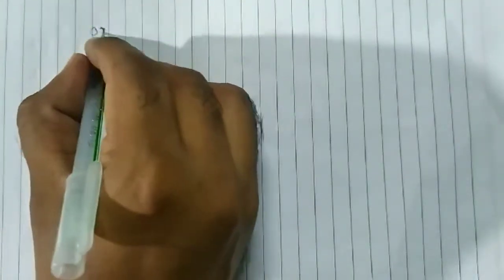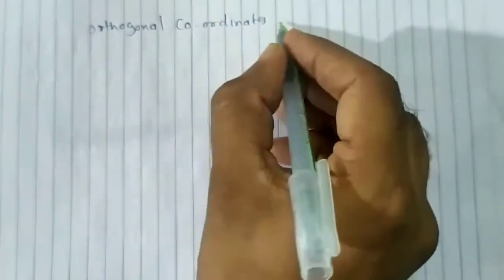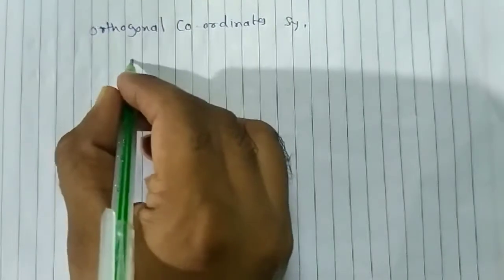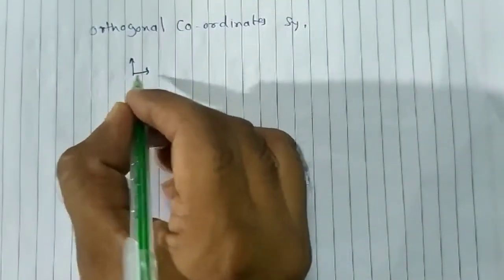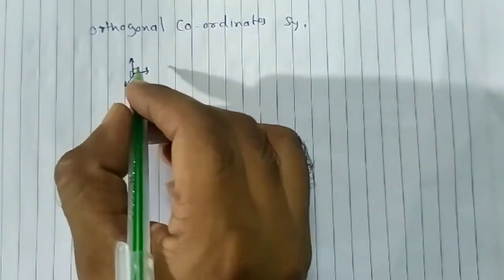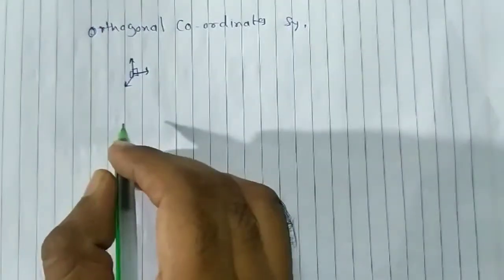First, we need to understand — or we are going to revise — what is an orthogonal coordinate system. So, if in a curvilinear coordinate system there is a point P, at this point the coordinate lines intersect each other. If we draw a tangent to each coordinate curve and if these tangents are mutually perpendicular to each other, then we call that coordinate system an orthogonal coordinate system.